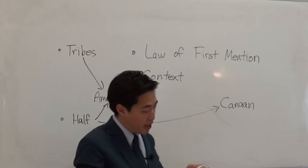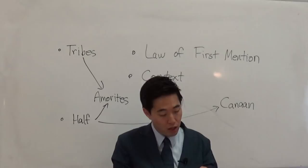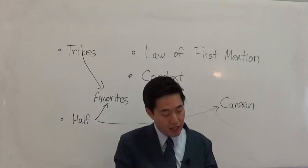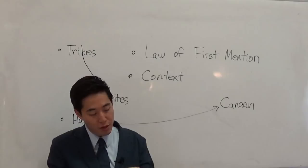Now, divide this land for an inheritance unto the nine tribes and the half-tribe of Manasseh, with whom the Reubenites and the Gadites have received their inheritance, which Moses gave them beyond Jordan eastward, even as Moses, the servant of the Lord, gave them, from Aroer, that is upon the bank of the river Arnon, and the city that is in the midst of the river, and all the plain of Medeba, unto Dibon.